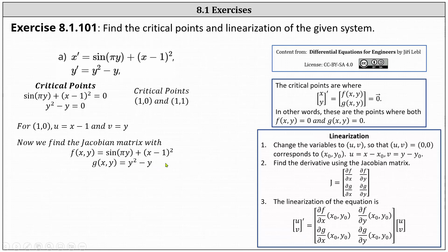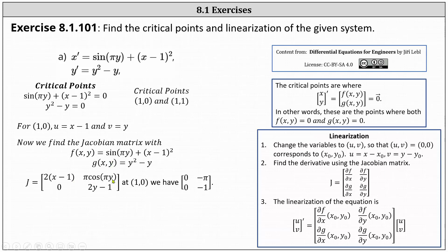For the first row of the Jacobian matrix, the partial of f with respect to x is equal to two times x minus one, and the partial of f with respect to y is cosine pi y times pi, or pi cosine pi y. In the second row, the partial of g with respect to x is zero, and the partial of g with respect to y is two y minus one.